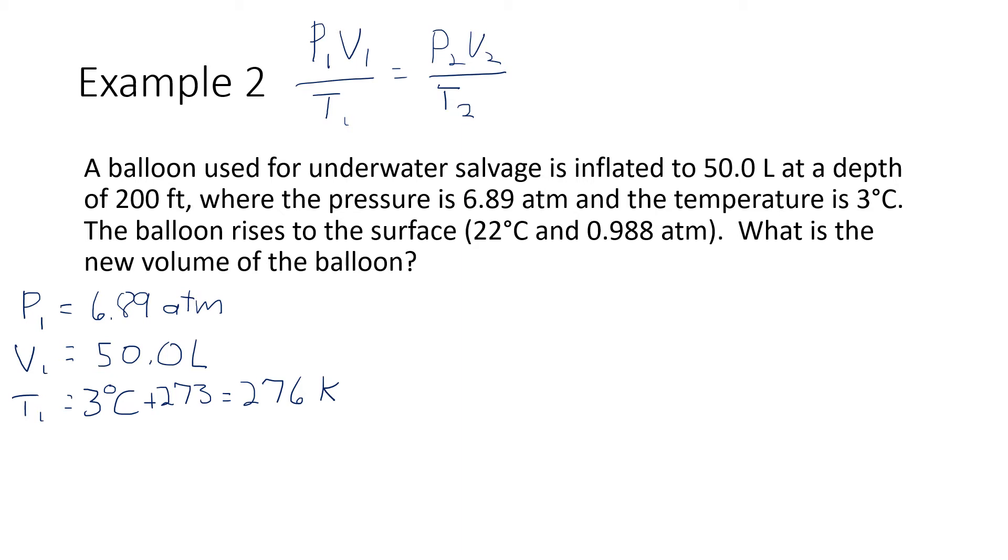Then it says that the balloon rises to the surface. So we'll have our new conditions. We'll have our P2, our V2, and our T2. And at the surface, let's see, the pressure at the surface is 0.988 atmospheres. The volume at the surface is our unknown. That's what we're asked to find. And the temperature is 22 degrees C. But once again, we'll want to add 273 to that. And I believe that gives us 295 Kelvin for the temperature.